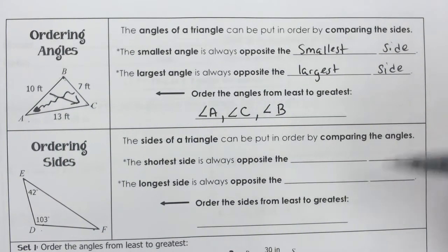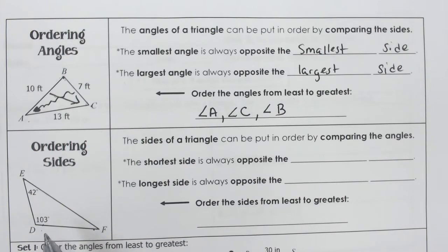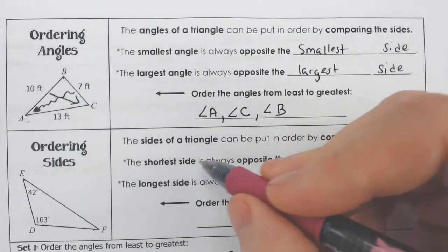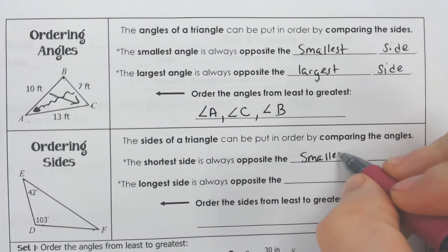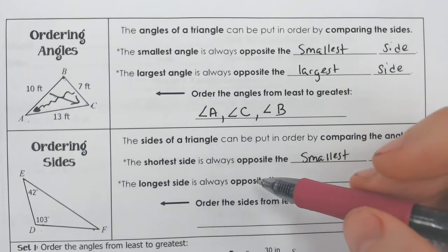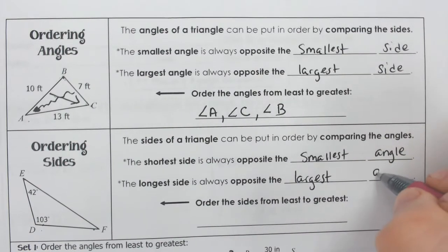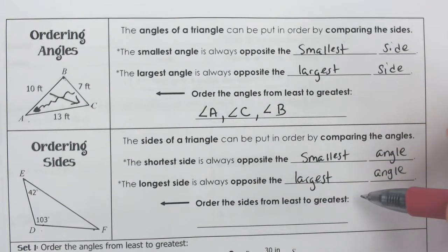Now this is a two-way street. If the angles are determined by the biggest sides and the smallest sides, then the sides are also going to be determined by which angles are the biggest. The shortest side is always going to be opposite of the smallest angle, and the longest side is always going to be opposite of the largest angle.